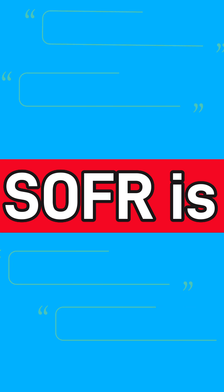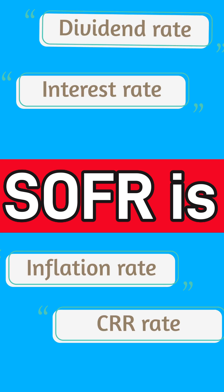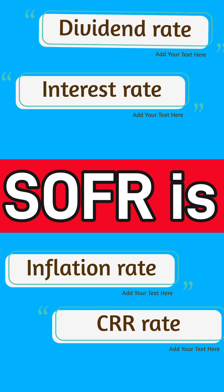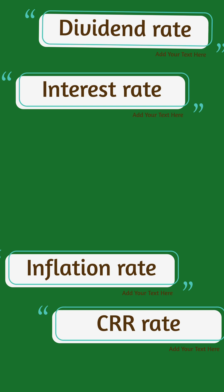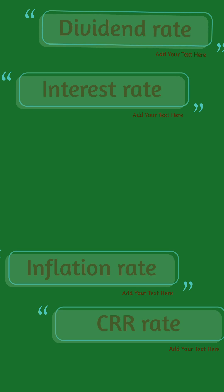While SOFR is used in the USD money markets, SONIA is used in the GBP money markets, and different countries have their own alternate reference rates. What is SOFR — is it a dividend rate, an interest rate, an inflation rate, or a CRR rate? Give your answers in the comment section below.